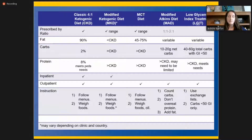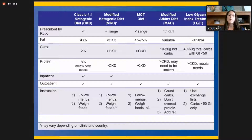MCT oil has an increased potential to make ketones, and this is the premise of the MCT diet. The oil can make up approximately 30 to 60% of the calories. MCT oil can also be added to any ketogenic diet to boost ketones, and it can alleviate or prevent constipation. The goal of the low glycemic index treatment is to stabilize glucose by limiting carbohydrates and eating only those that digest more slowly. The low glycemic index treatment and the modified Atkins diet are almost exclusively started outpatient after a teaching session. In the first three diets, each food is weighed for each meal and has the same ketogenic ratio day in and day out, so there's little variation in what the patient is actually eating in terms of macronutrient composition.